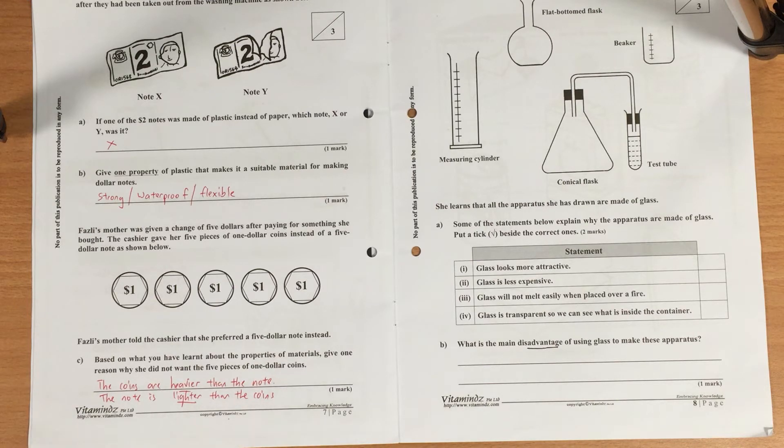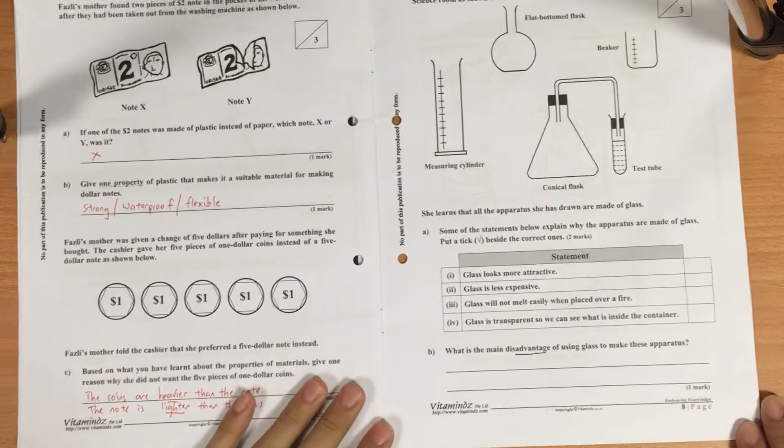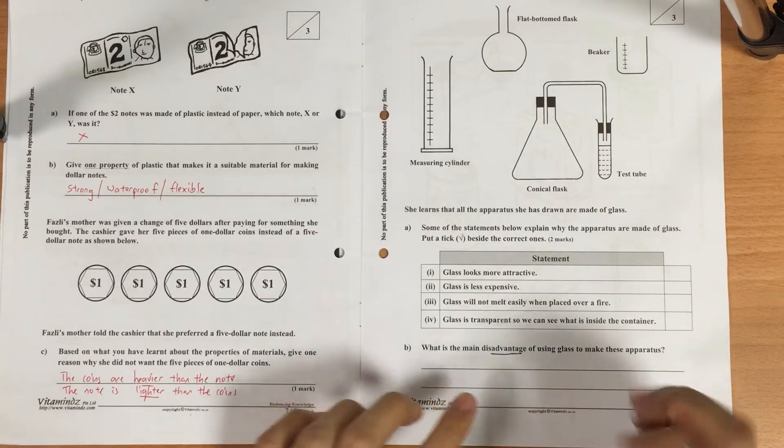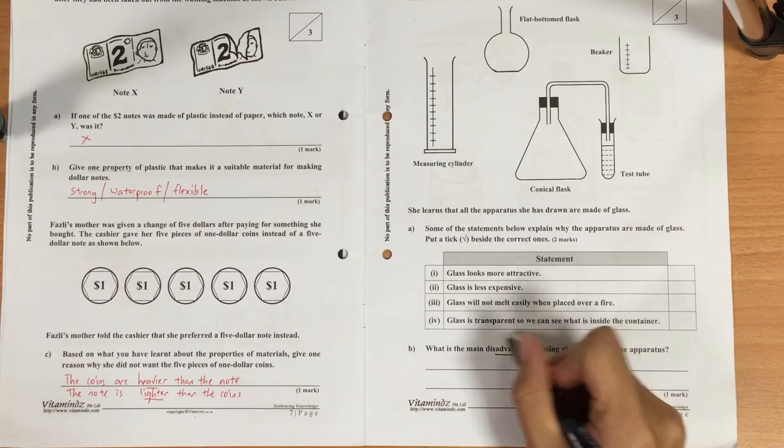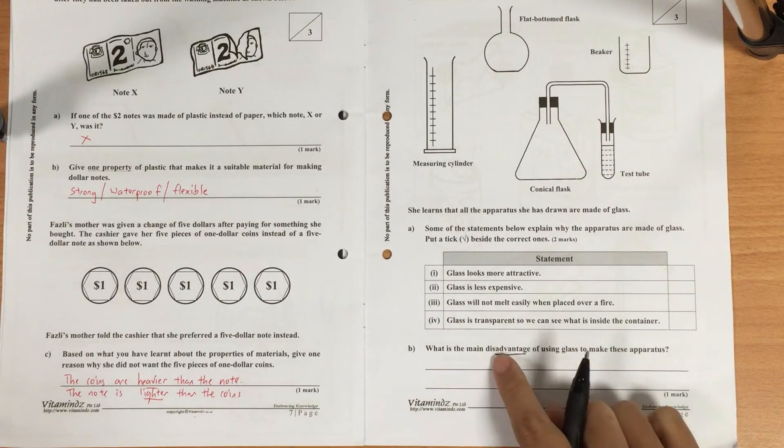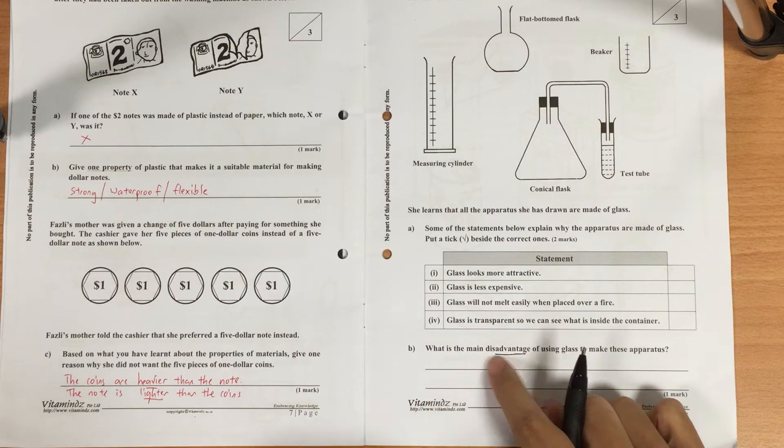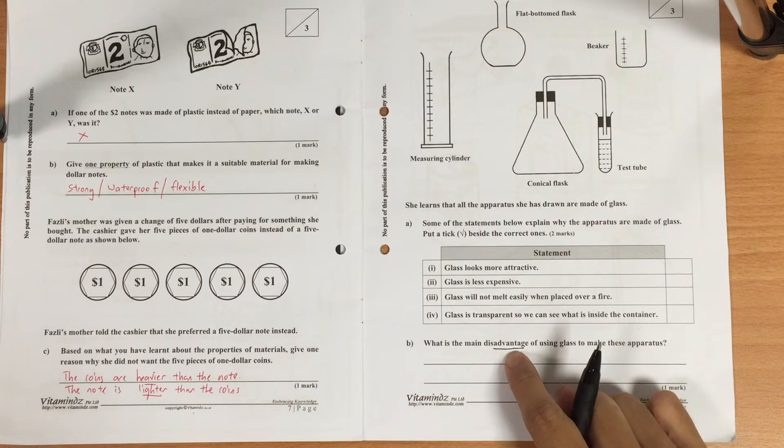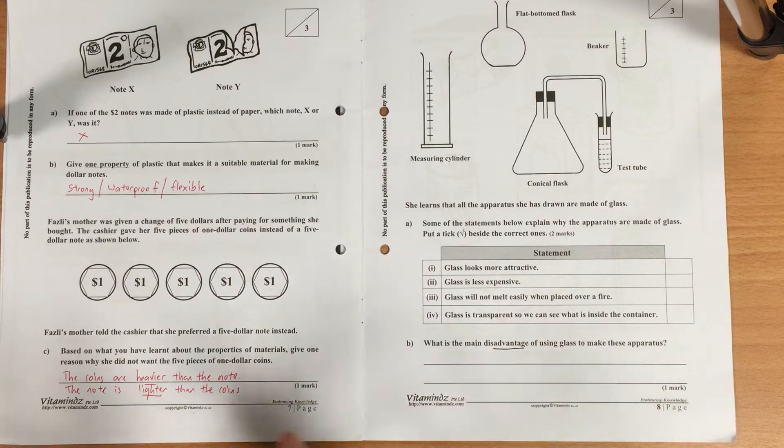On to worksheet three. This big word 'disadvantage' in part B - many of you do not quite understand what does it mean by disadvantage. Disadvantage means what is not so good about this thing.